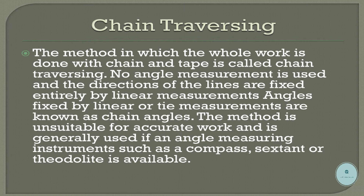Chain traversing: the method in which the whole work is done with chain and tape is called chain traversing. No angle measurement is used; the directions of the lines are fixed entirely by linear measurements. Angles fixed by linear or tie measurements are known as chain angles. The method is unsuitable for accurate work.